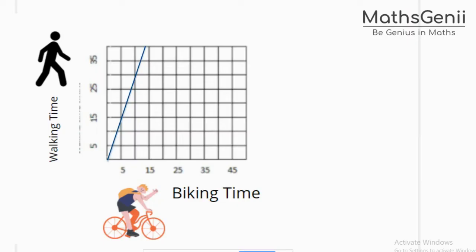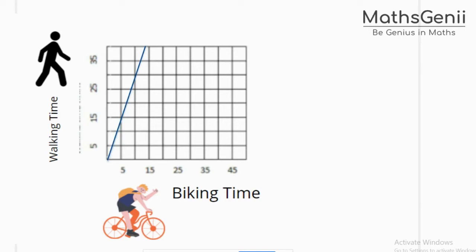To start with, I would like to take an example of a line, although we are going to talk about curves in the entire chapter. That is why we use derivatives. The very first concept in the application of derivatives chapter is rate of change of a quantity. This is a comparison of how long a bike takes versus how long it takes to walk around the city.